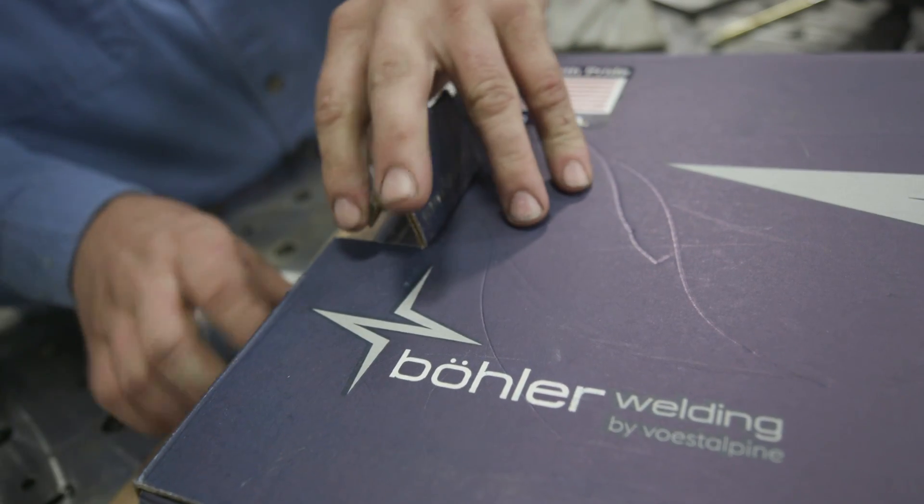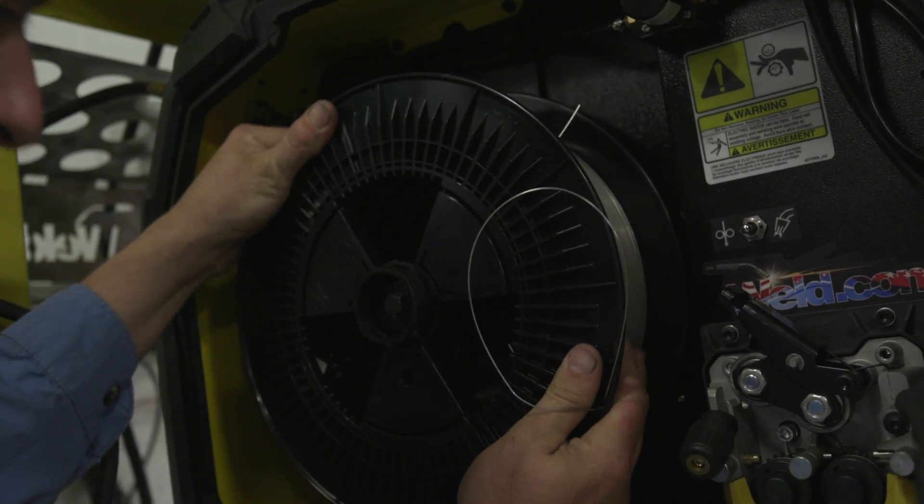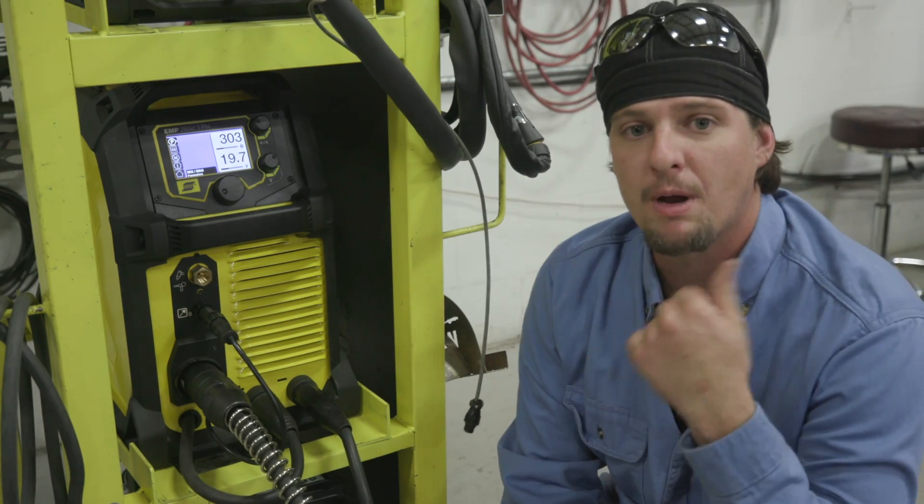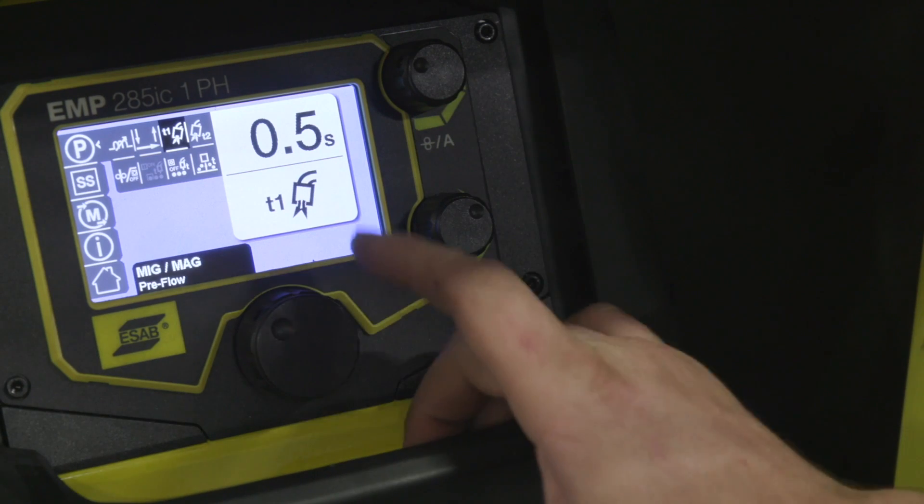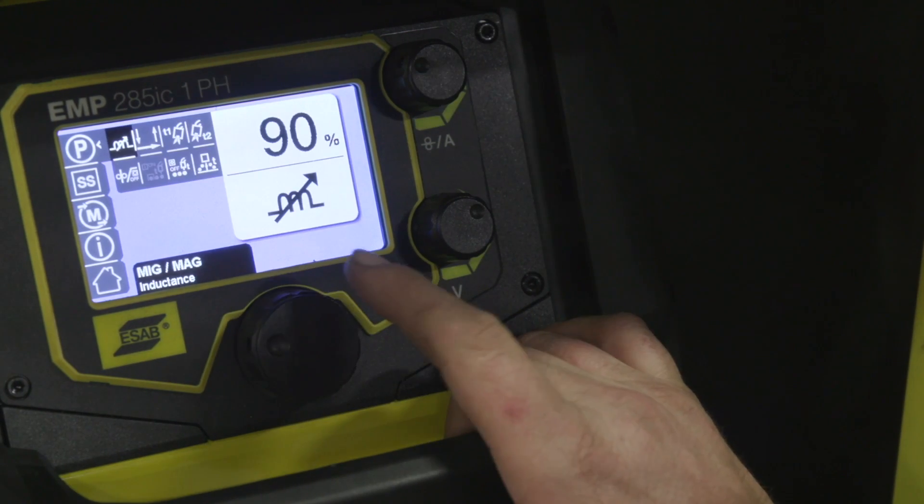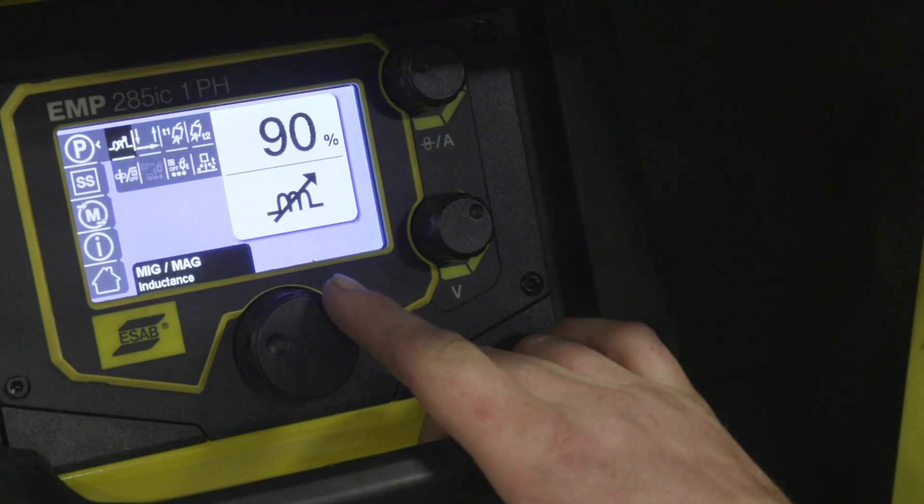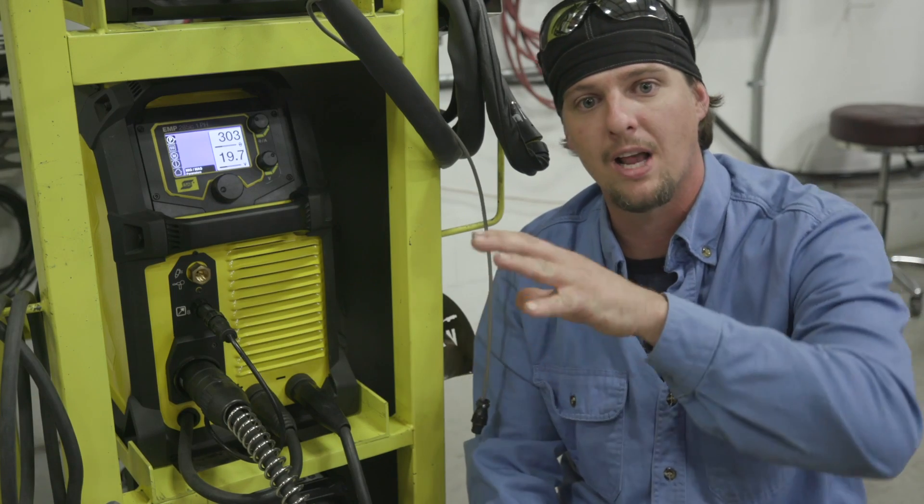Today I'm going to be running a Vesta ER316SI bowler wire 0.035. It's a 316 stainless wire. I'm using the ESAB 285. On my settings, I like running my pre-flow about 0.5 seconds, letting all the bad atmosphere, it pushes it away. My inductance, I run at 90%. I like to have my puddle really fluid because it's always stiff. Stainless steel wire is stiff.